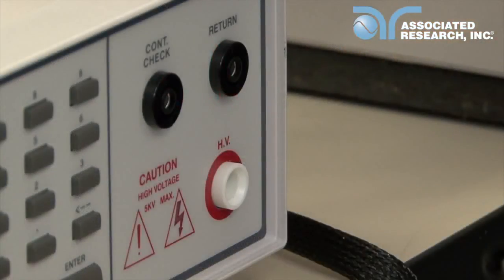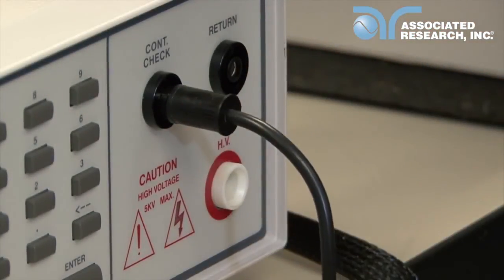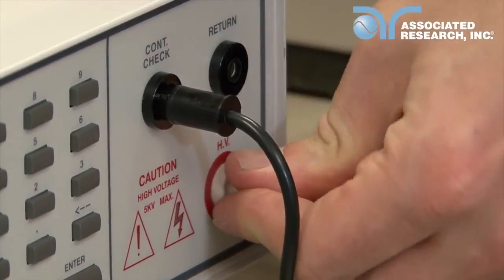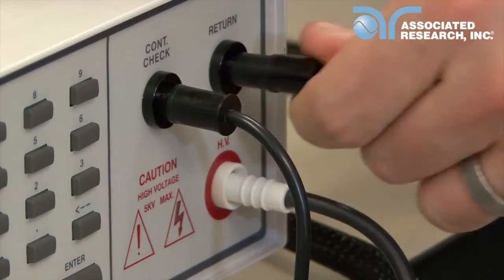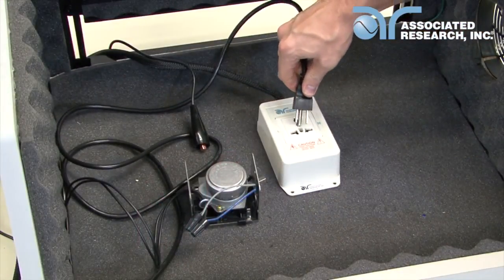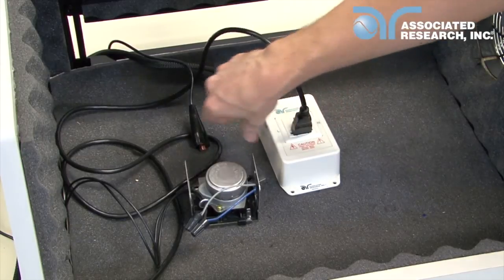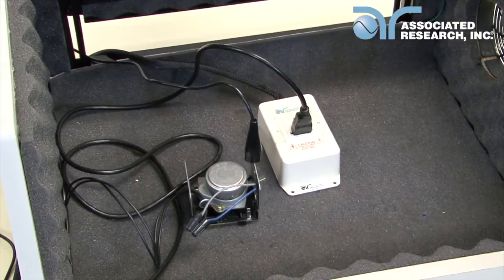If you're using the universal style adapter box instead of the scanner channels, first connect the adapter box to the continuity check and HV terminals. Then, connect the black lead to the return terminal. Simply plug the three prong cord of the DUT into the adapter box. Then, connect the return lead to the chassis of the DUT.